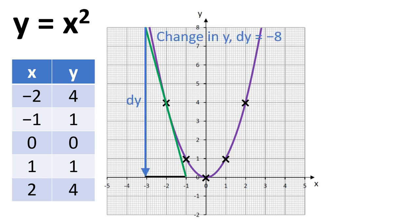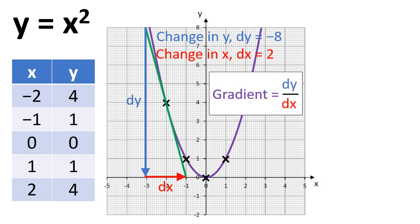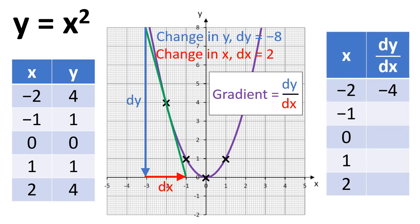So the change in y here is minus eight. The change in x is two, and so we can work out the gradient because we do dy divided by dx. And so when x equals minus two, so for this point here, x equals minus two, the gradient at this point is minus four.